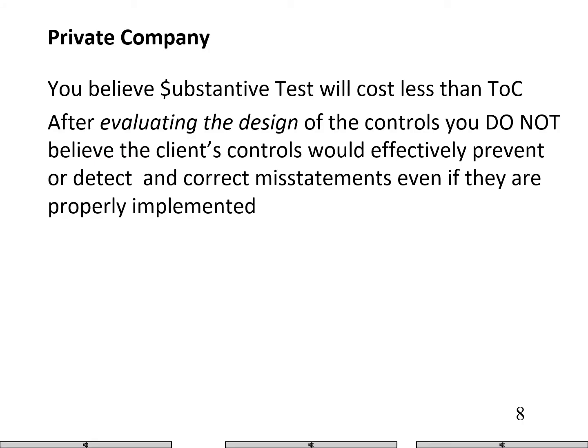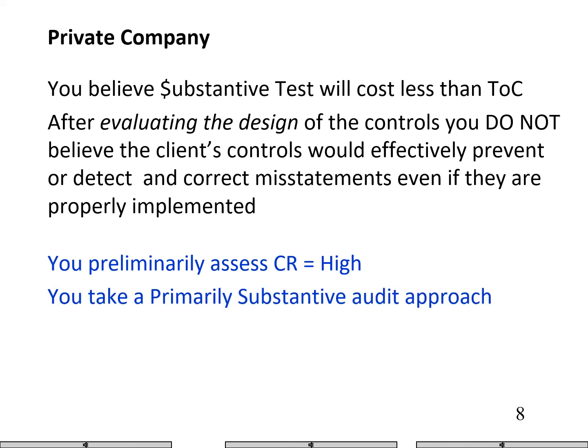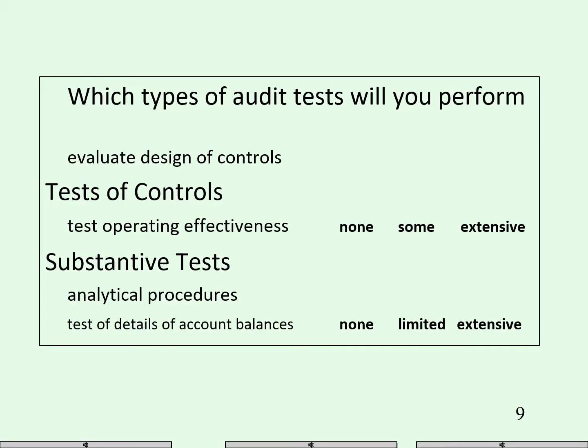You believe substantive tests will cost less than tested controls. Since it's a private company, I already know that I'm going to take the primarily substantive approach. The controls we don't believe would be effective, so that just confirms that I'm going to preliminarily assess control risk is high. Take a primarily substantive approach. Always none for tested controls because it's a private company. Yes, we'll do analytical procedures. And because we're not relying on the controls, we're going to have to perform extensive substantive tests.